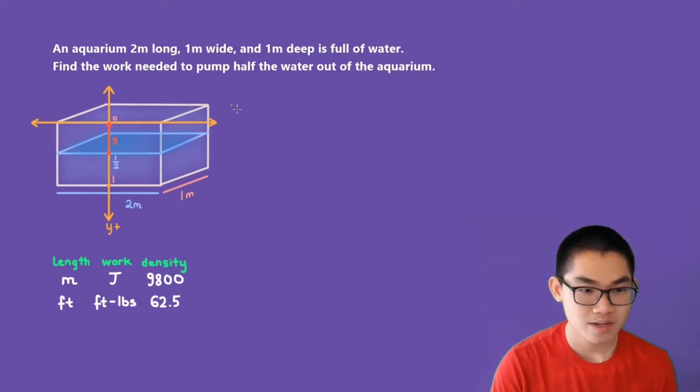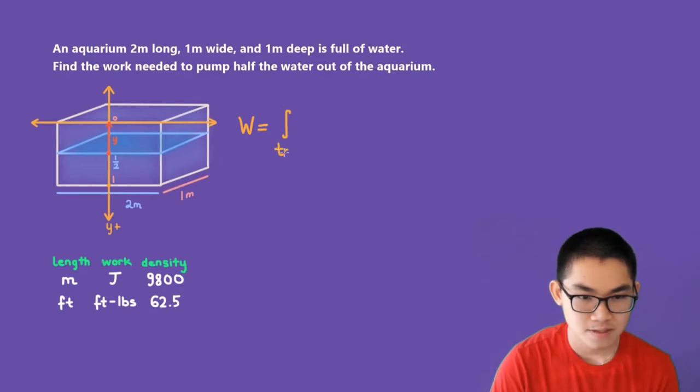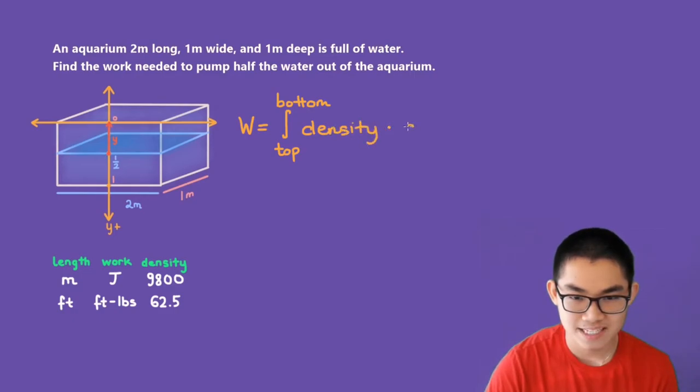We are now ready to solve this problem. What's the formula to calculate the amount of work to pump all the water out? The work formula is W equals the integral from top to the bottom of density times the distance that we need to pull the layer of water to the top, times the area. This area is basically the area of the layer of water, and then we have dy.